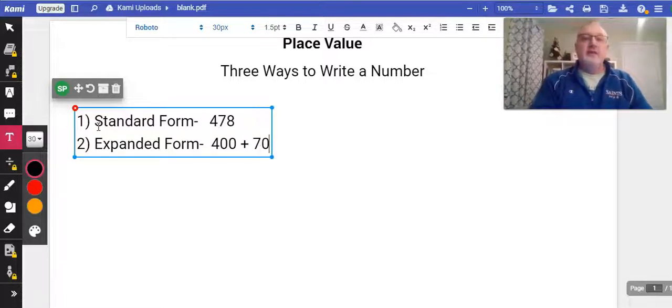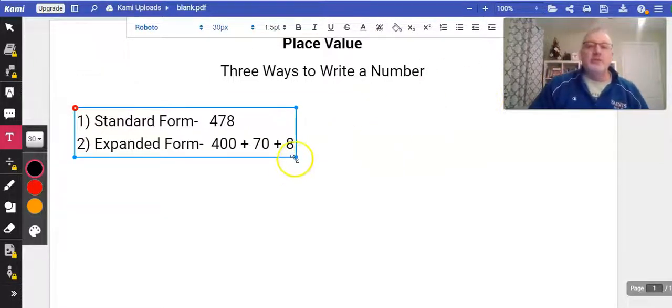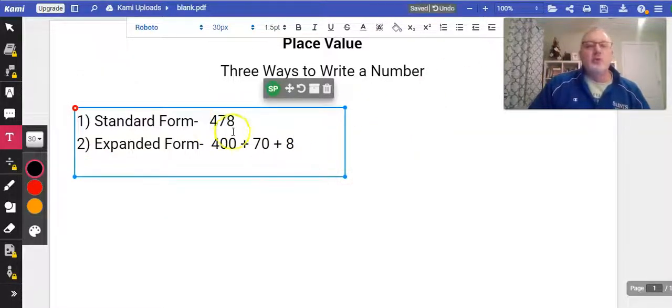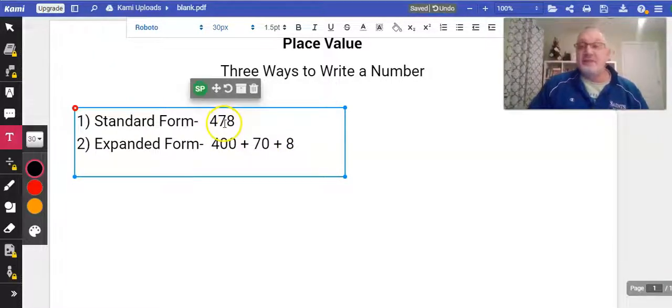That'd be like 400 plus 70 plus 8. What are we doing with this? We're taking the 8 in the ones place, the 7 is in the tens place so you have 7 tens which is 70, and the 4 is in the hundreds place so that makes 400. So again, this is expanded form.